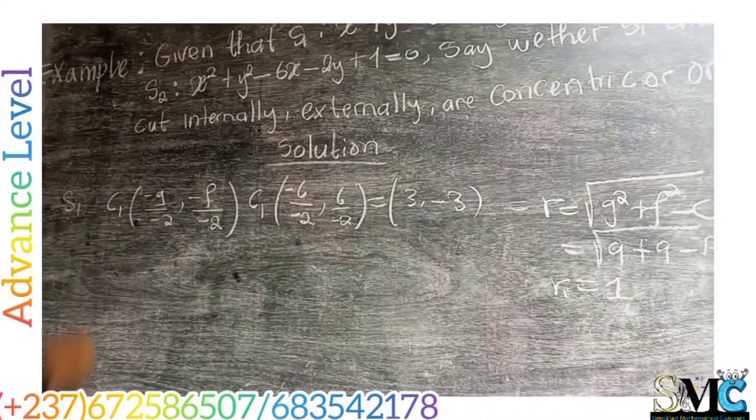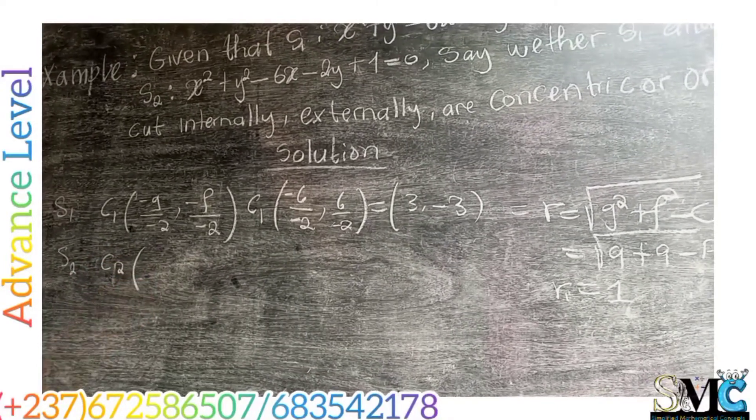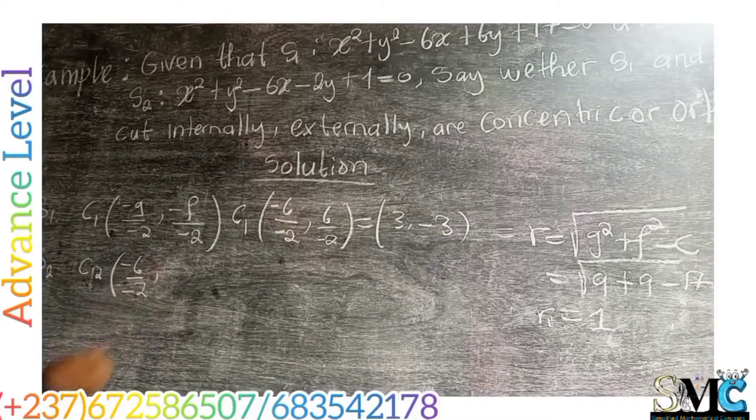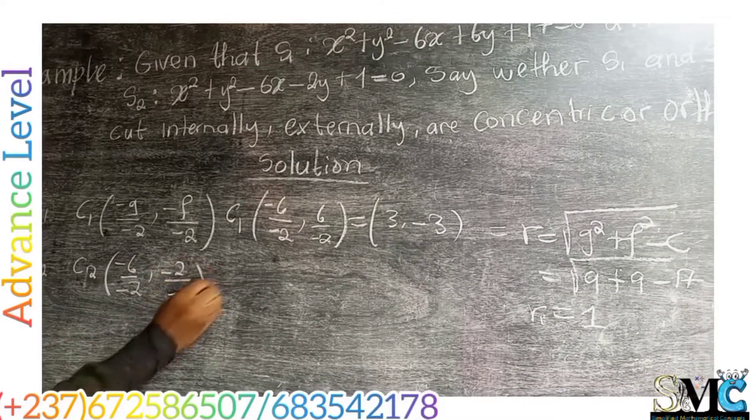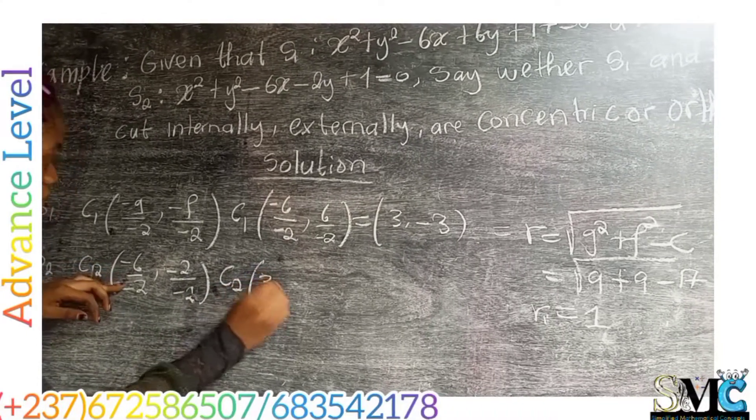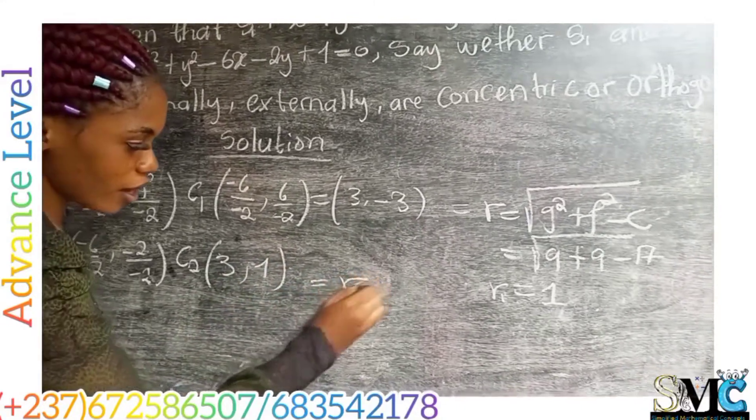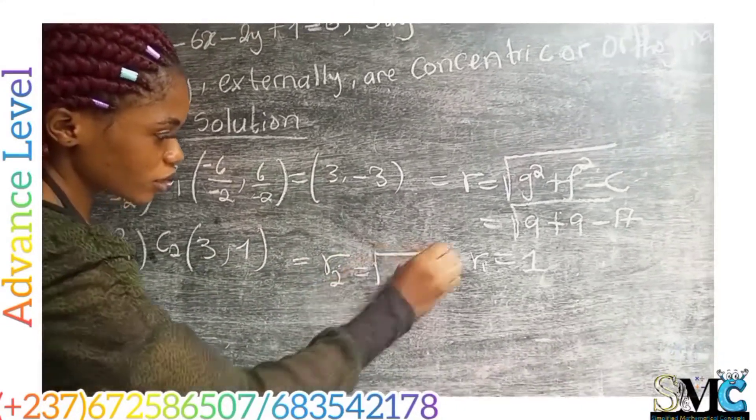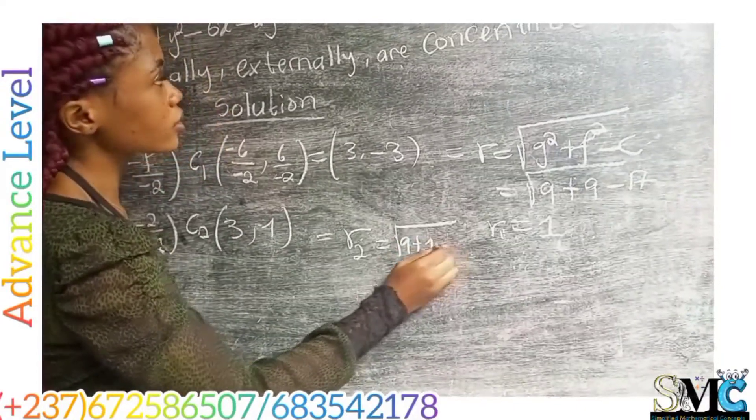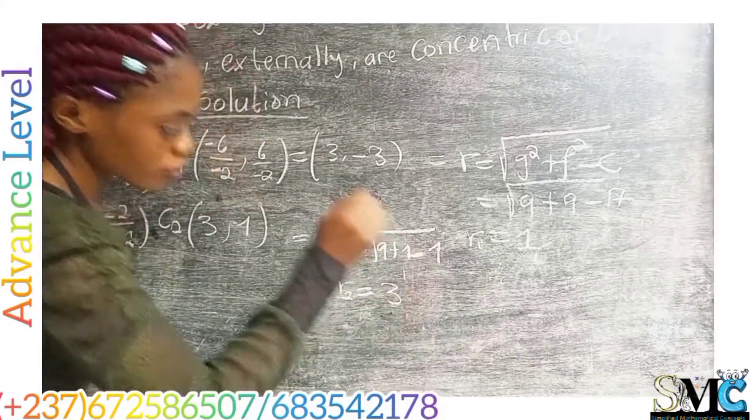For the second circle, we have S2 has center C2 to be negative 6 on negative 2 and negative 2 on negative 2. So the center C2 will be 3 and 1, implying that our R2 is going to be the square root of 9 plus 1 minus 1, implying that R2 is equal to 3.